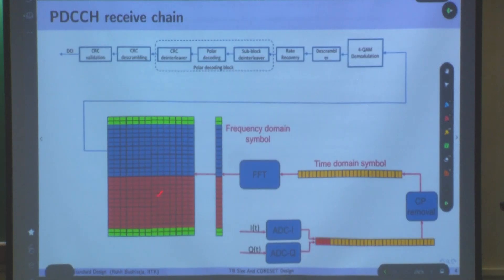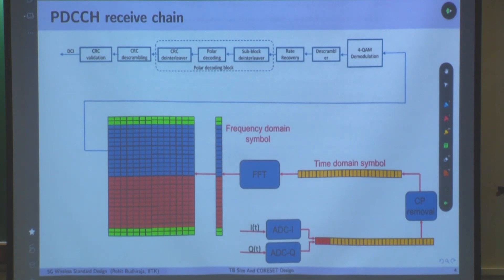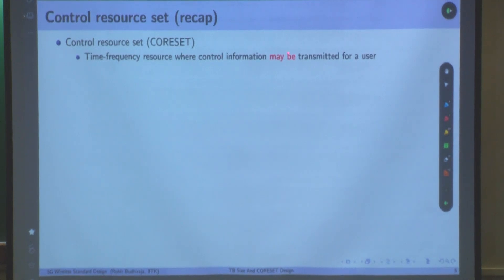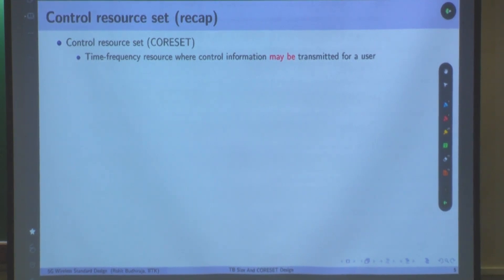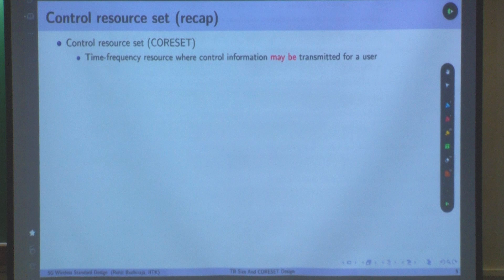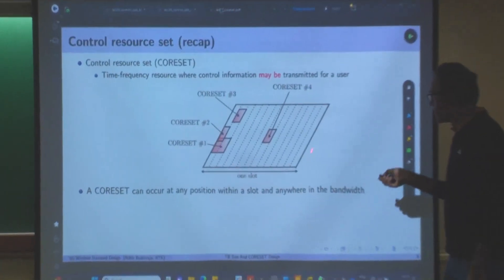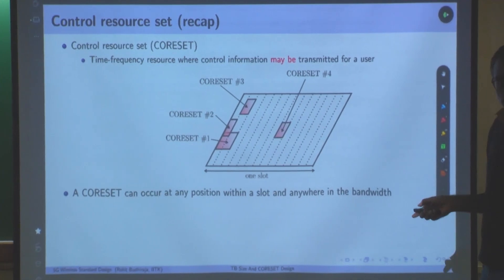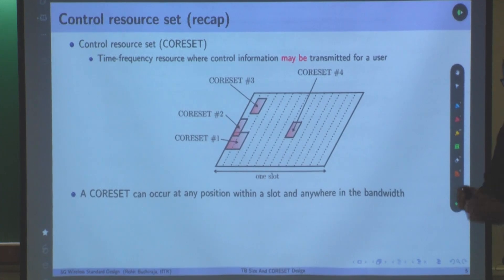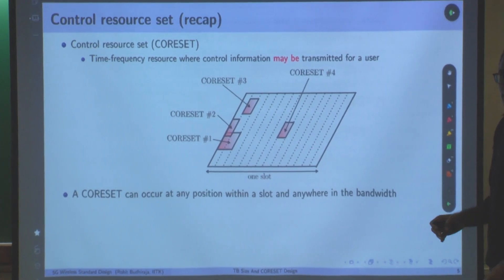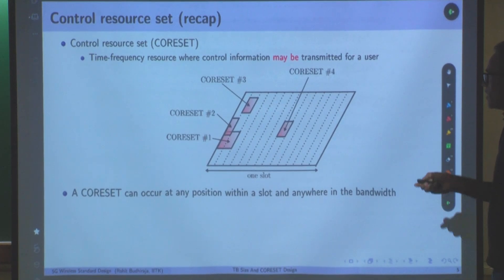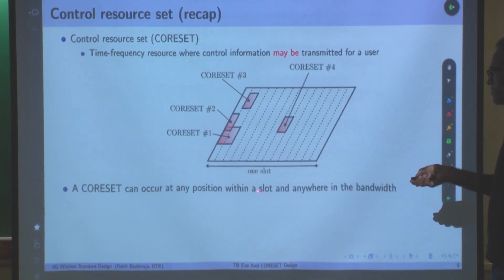The definition of CORESET is common to both the base station and the user. A CORESET is a time-frequency resource where control information may be transmitted for a user. It is not necessarily true that the user will be served in that particular slot — the scheduler decides when it is appropriate. CORESETs can occur at any position within a slot and anywhere in the bandwidth — anywhere in the 275 PRBs or the 14 symbols.